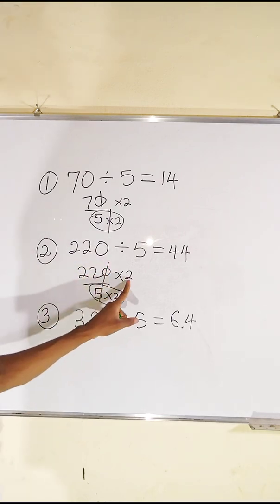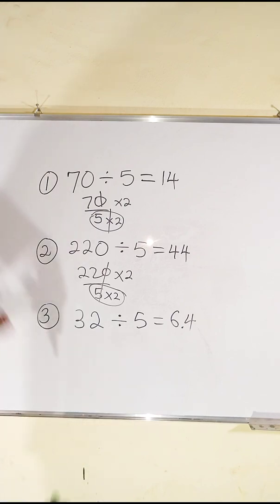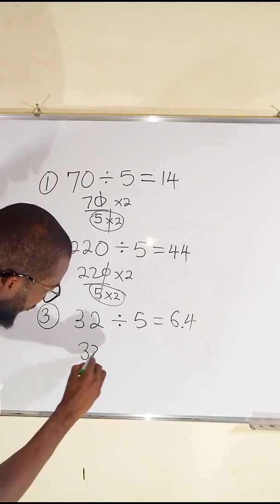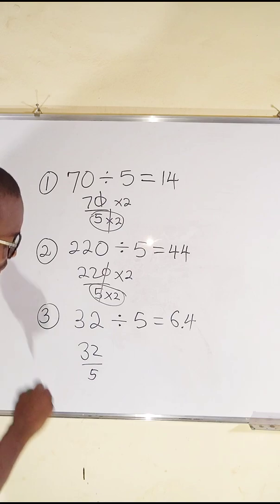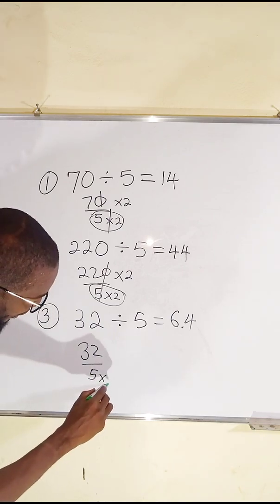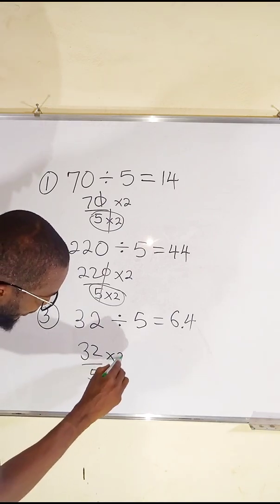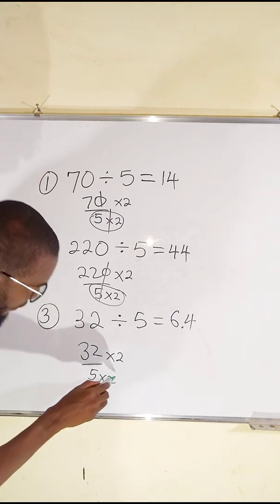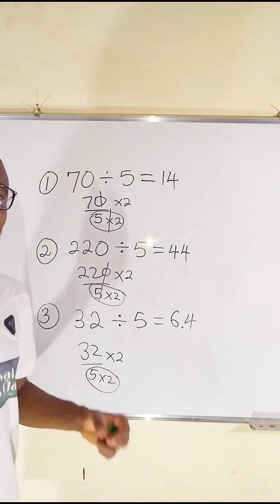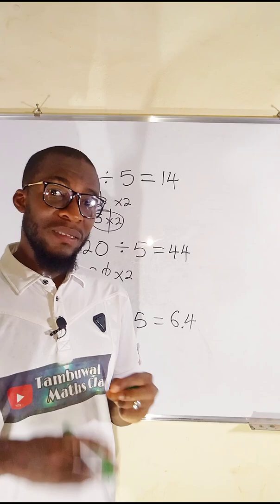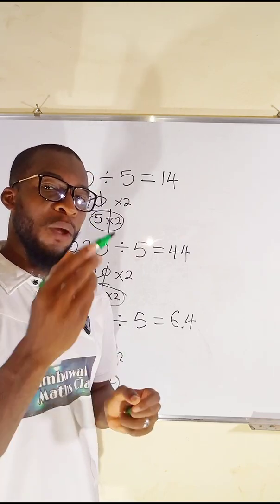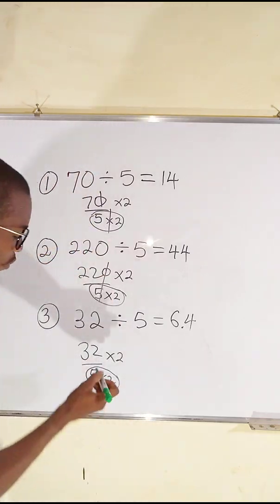And the last one, we have 32 divided by 5. You do the same thing: multiply this by 2, multiply this by 2, and multiply this by 2. This is 10, and you know that any number divided by 10 is the same thing as migrating the decimal point backward once.